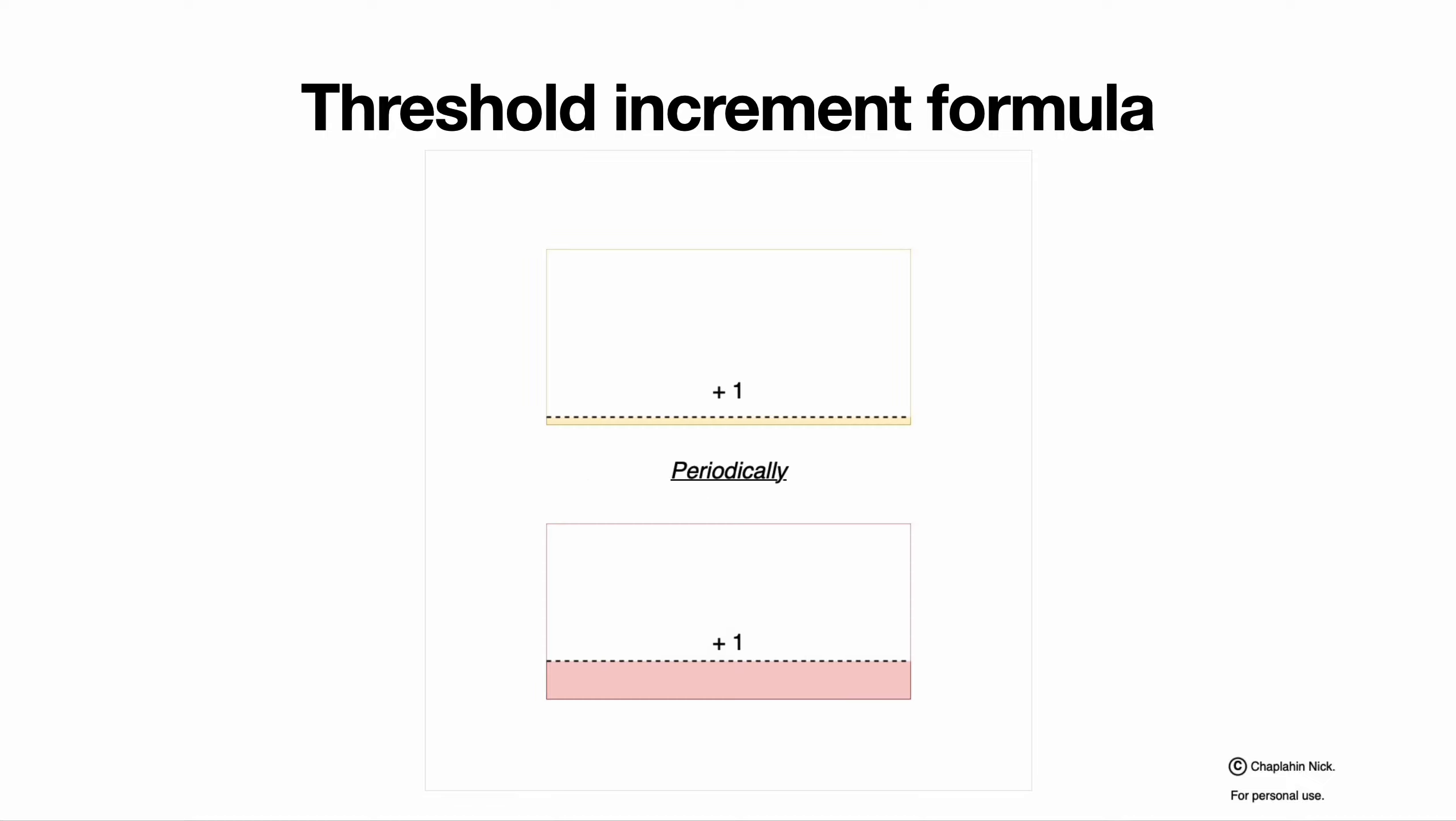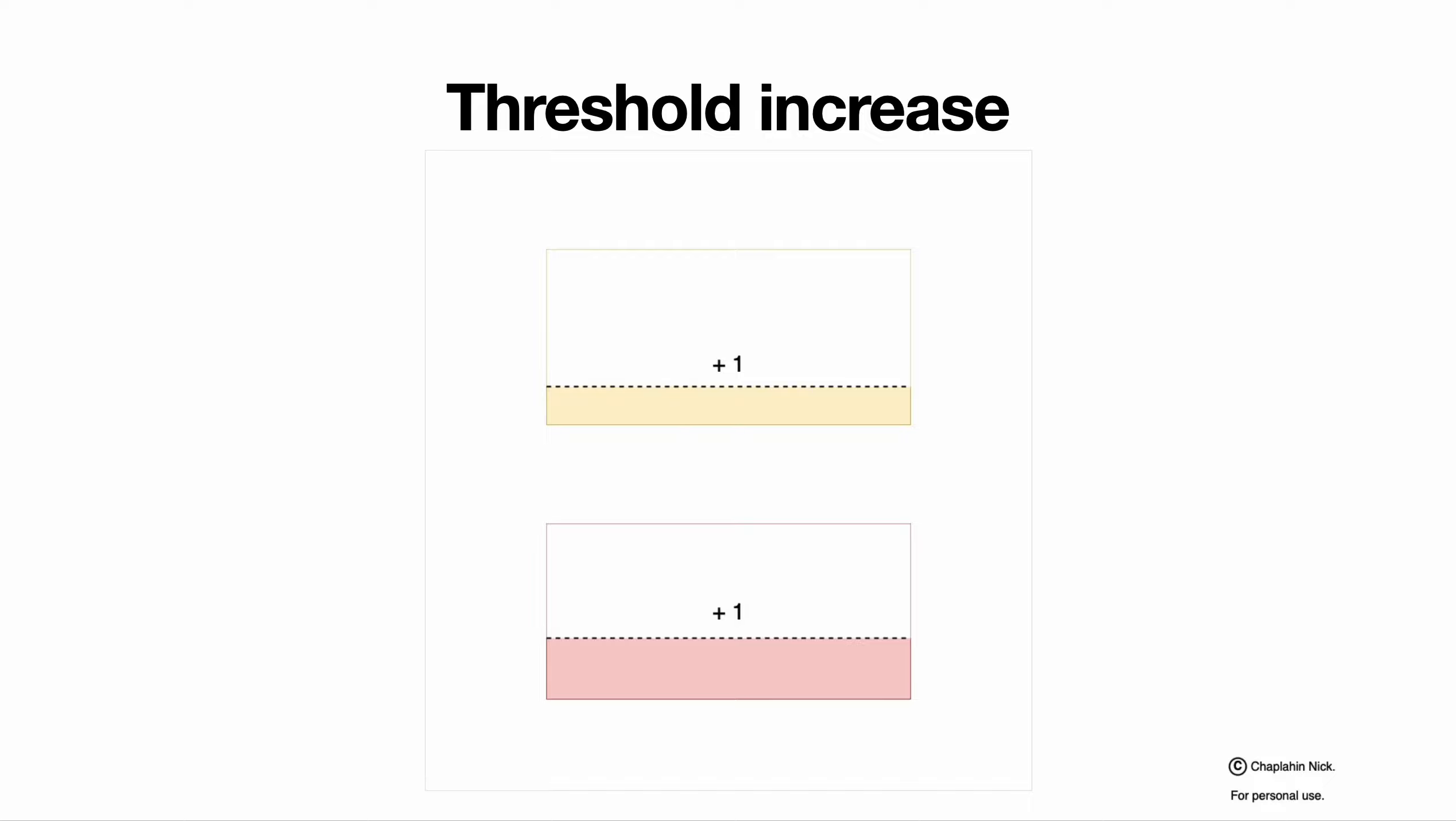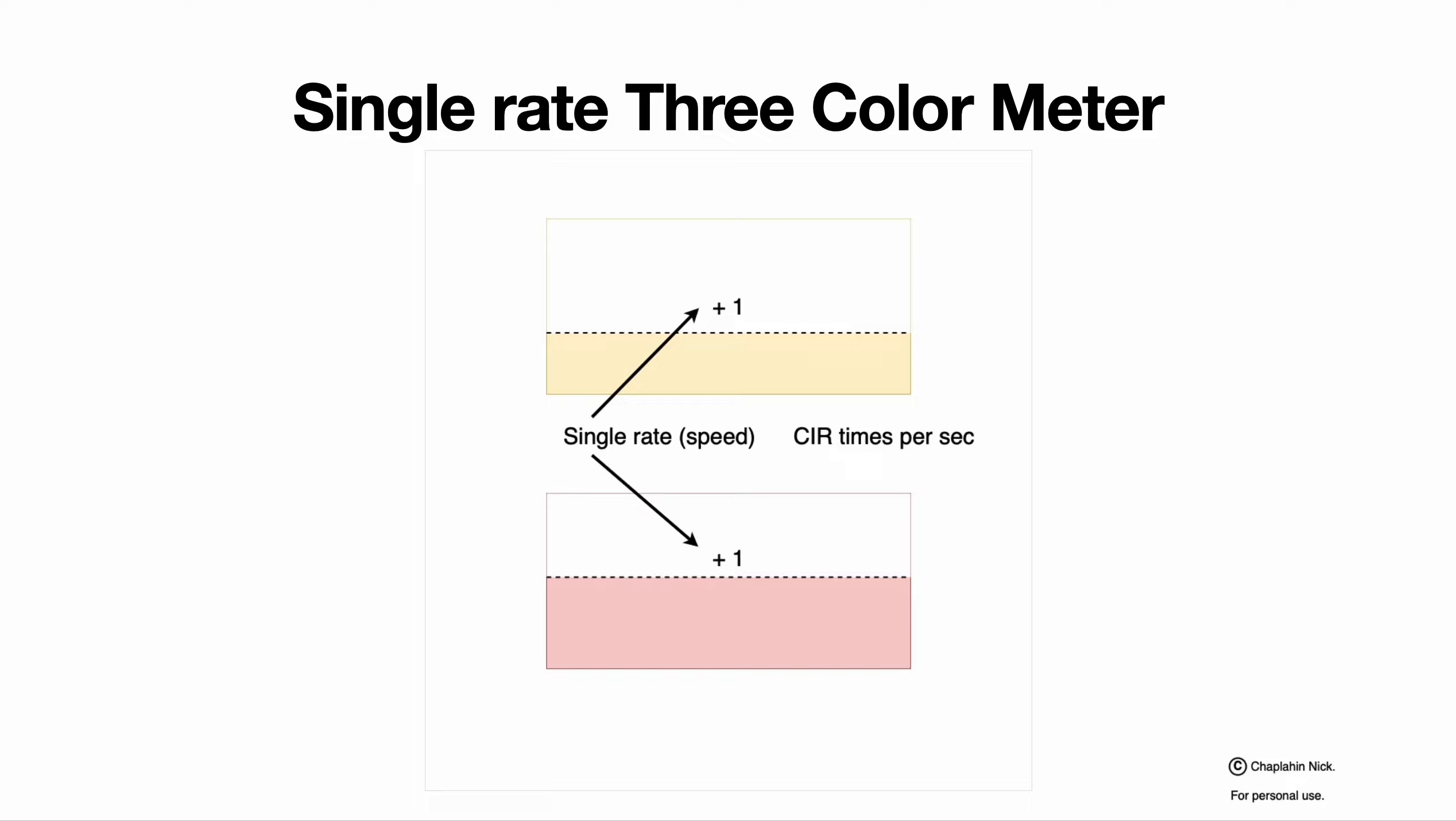Another parallel procedure that happens to thresholds is incrementing. Periodically, with some period, both red and yellow thresholds are incremented by one until they reach maximum value. If we have a single rate for incrementing, single speed, this is called CIR value, and this happens CIR times per second.